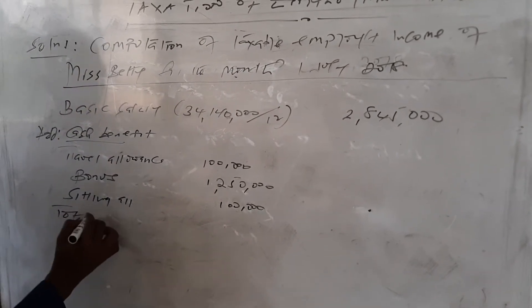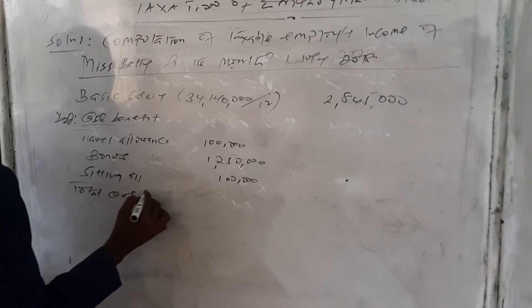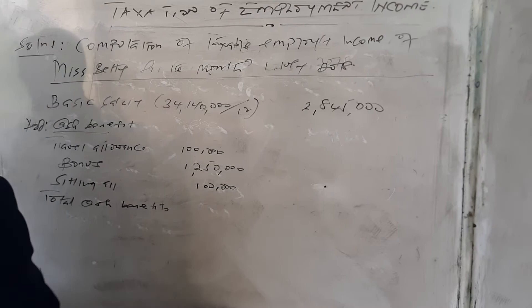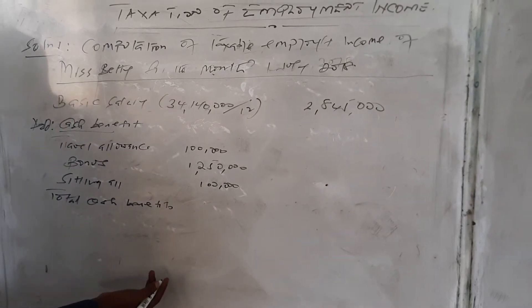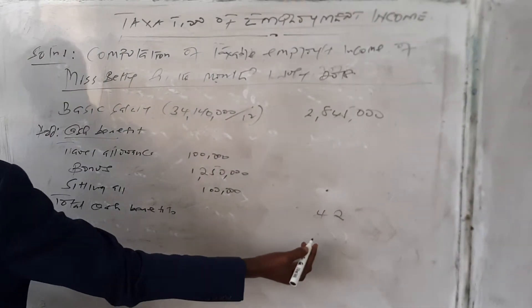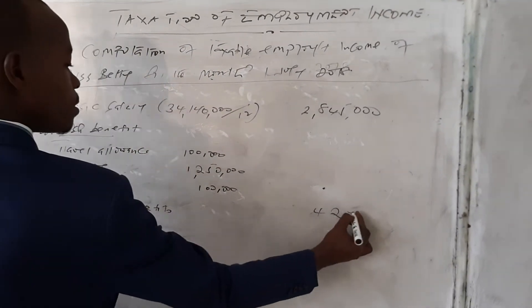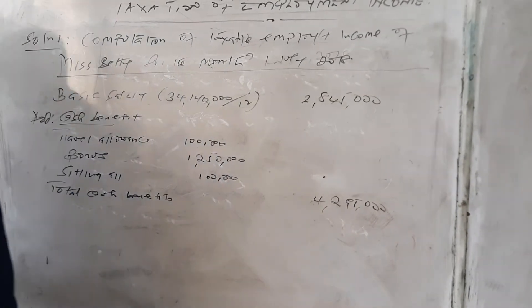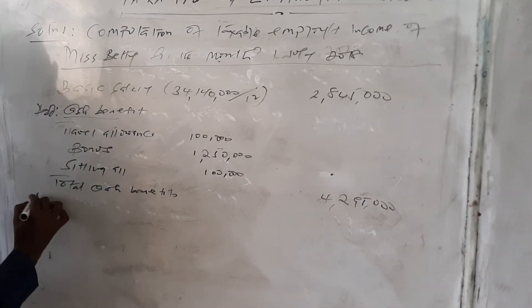The total cash benefits—the total here is 4,295,500.